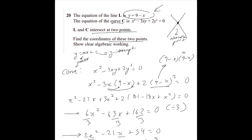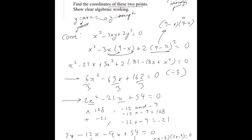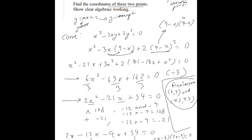We've found the x values. Using y equals 9 minus x: when x equals 6, y equals 9 minus 6 equals 3; when x equals 4.5, y equals 9 minus 4.5 equals 4.5. So the final coordinates of the two intersection points are (6, 3) and (4.5, 4.5). That is your final answer for a total of 5 marks.